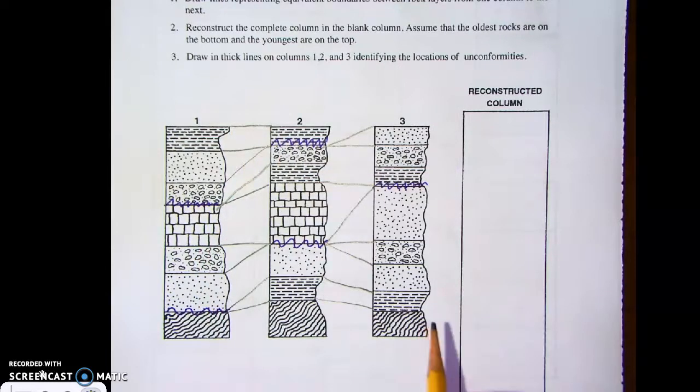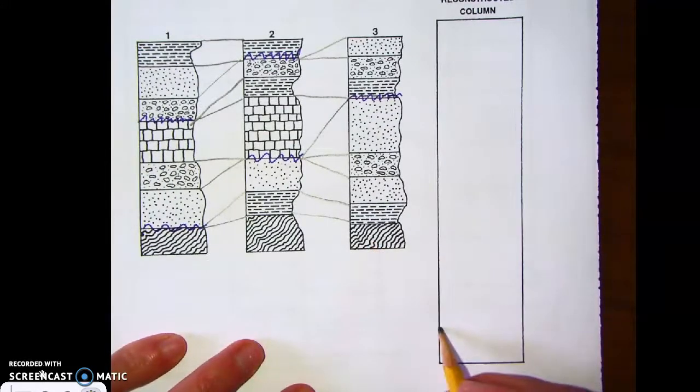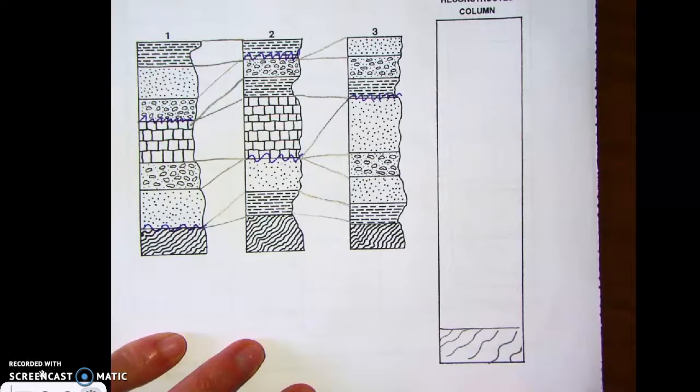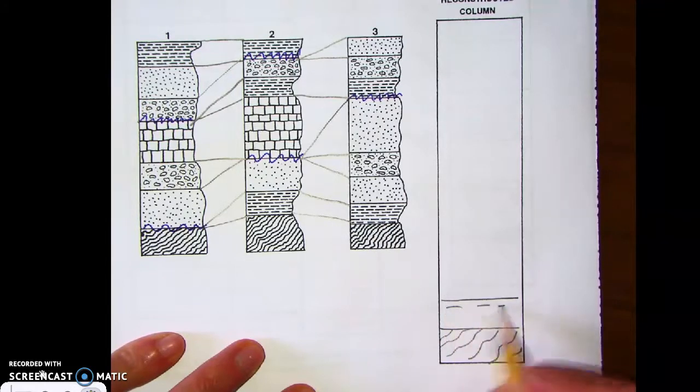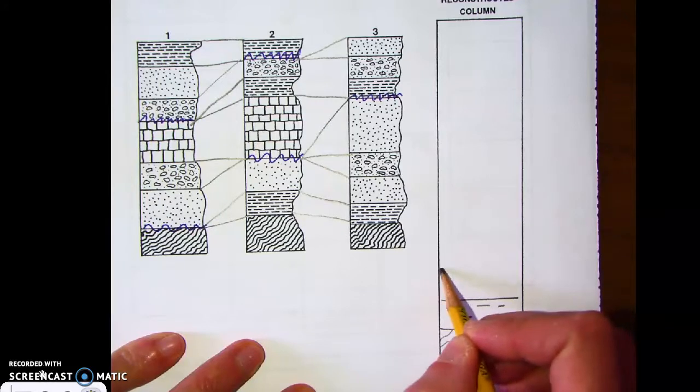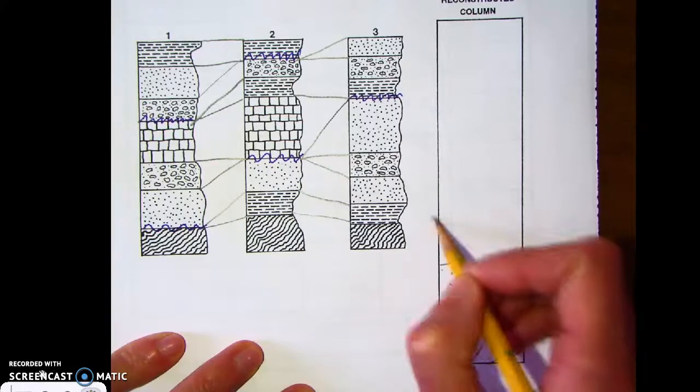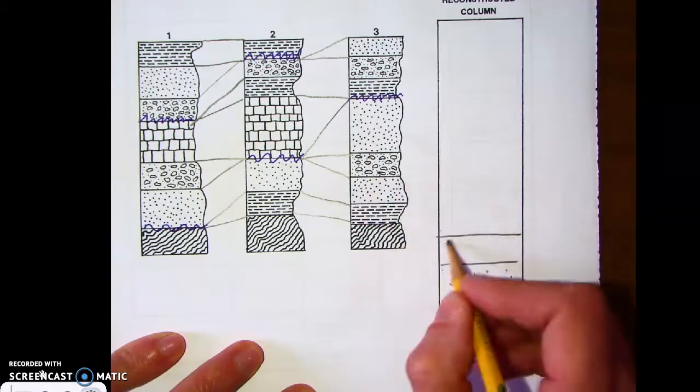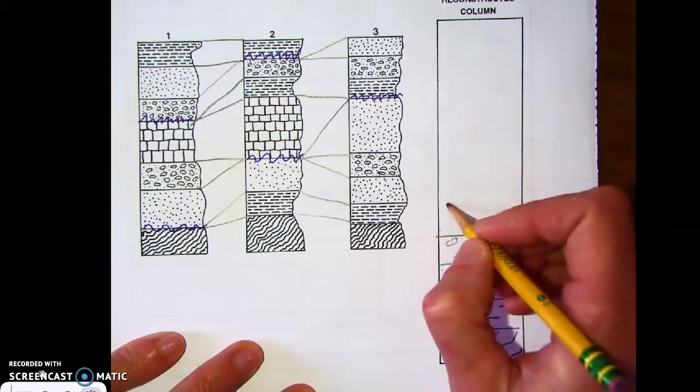So if we put this in order, what this means is that we're going to have our gneiss down at the bottom. I'm going to draw the gneiss, draw some kind of wavy lines like that. Our next layer going up would be the shale. And after that, we're going to have sandstone. Then after that, we have the conglomerate, the first conglomerate.